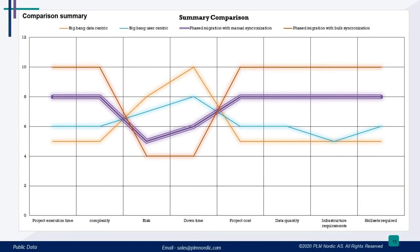Moving on to phased migration with manual synchronization, this is a good choice if you have a lot of data and want to be cautious about risks and downtime. However, it takes more time, costs more, and demands skilled people and equipment compared to the Big Bang migration approach.